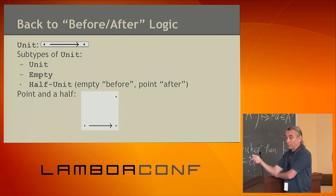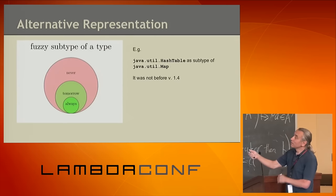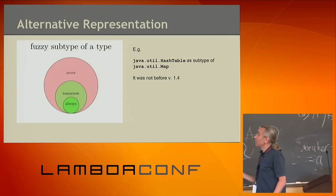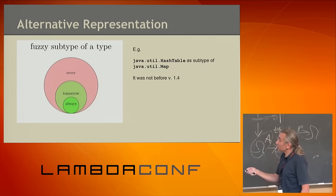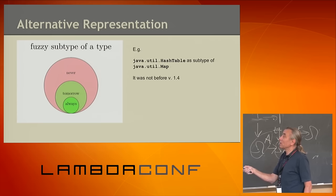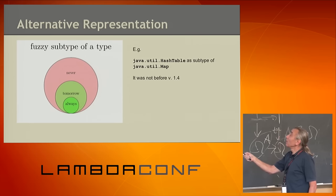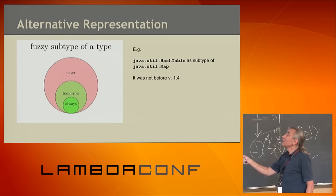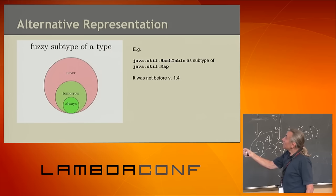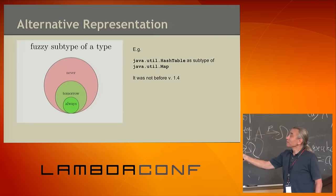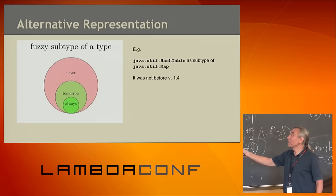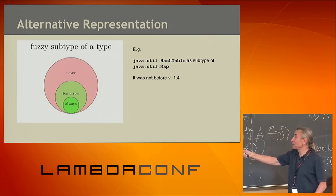This example shows that points may not be enough to define objects and types — there is more than just full instances. We can redraw this picture: some instances were always there, some will be there tomorrow, and some will never be. Like the hash table: it was not implementing Map before Java 1.4, but then hash table was retrofitted to implement Map.